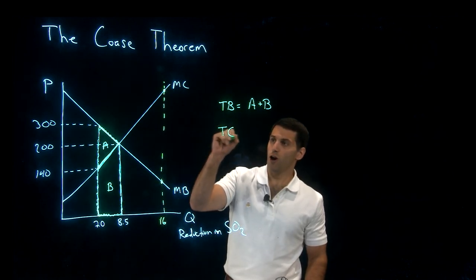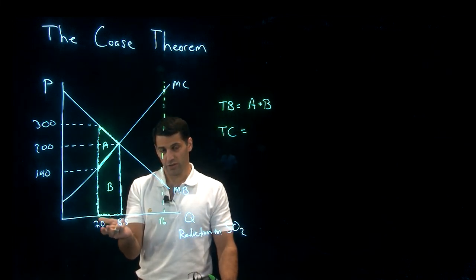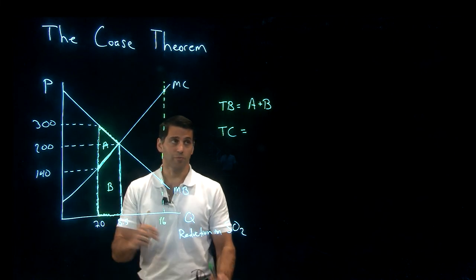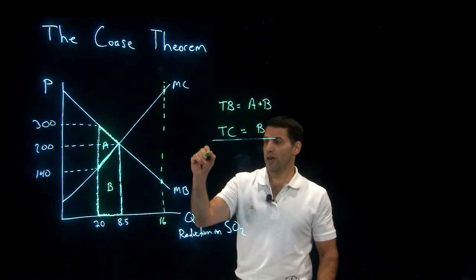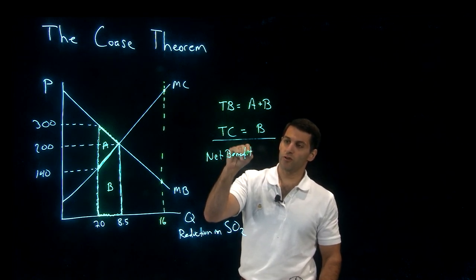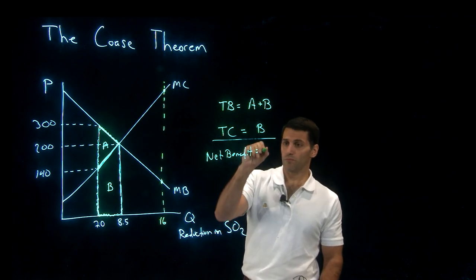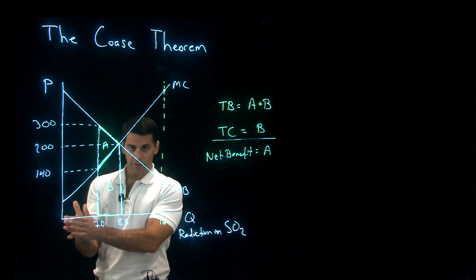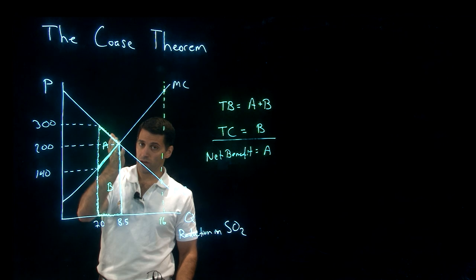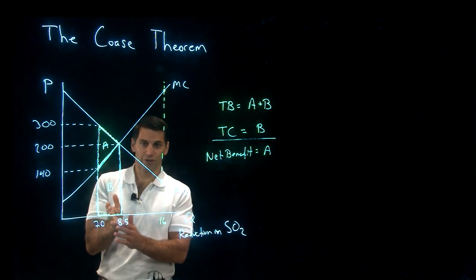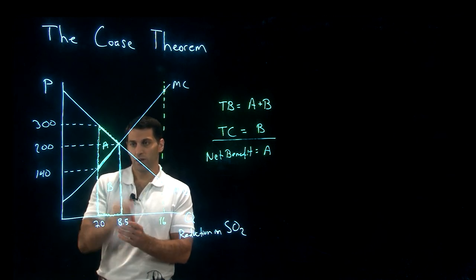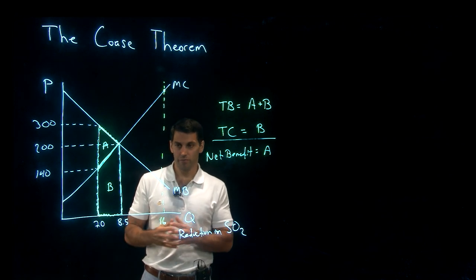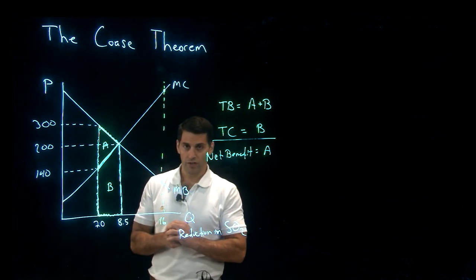The total cost of increasing the reduction in SO2 from 7 to 8.5 tons is the area below the marginal cost curve, which is just B. So the net benefit of increasing our SO2 reduction from 7 to 8.5 tons is area A. For any quantity between zero and 8.5 tons, where the marginal benefit of reducing pollution more exceeds the marginal cost, it is worthwhile for society to pursue an even cleaner environment.